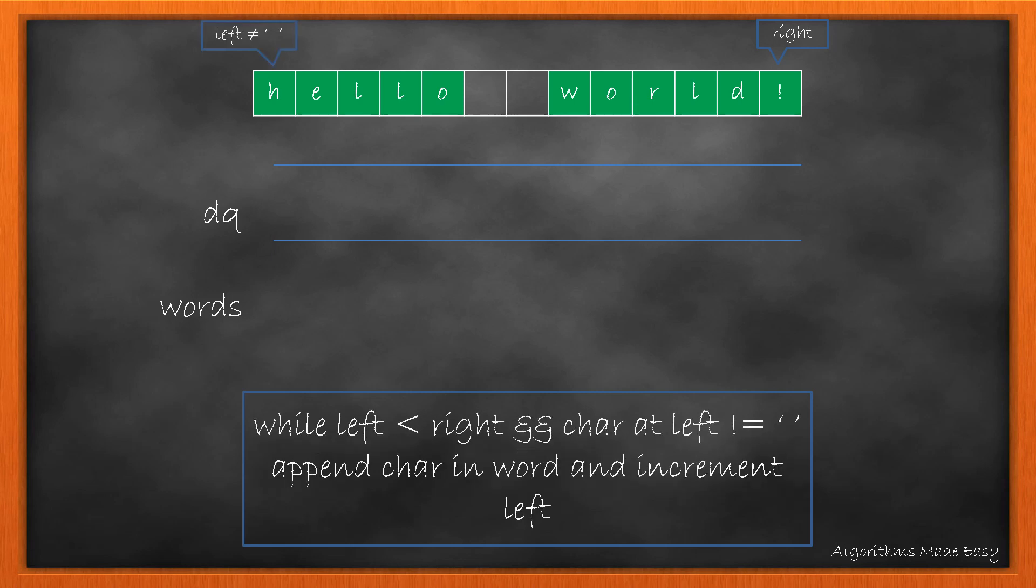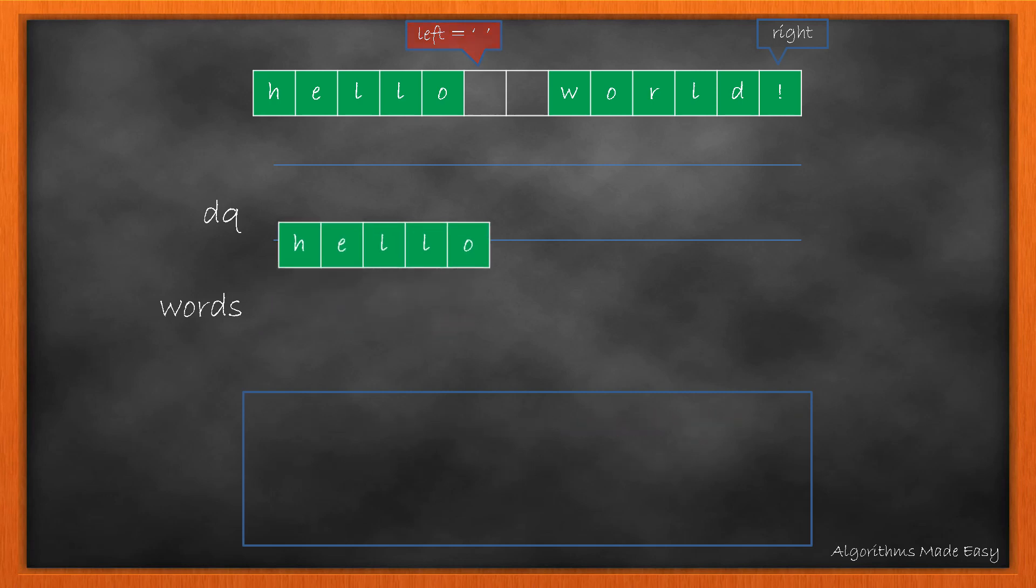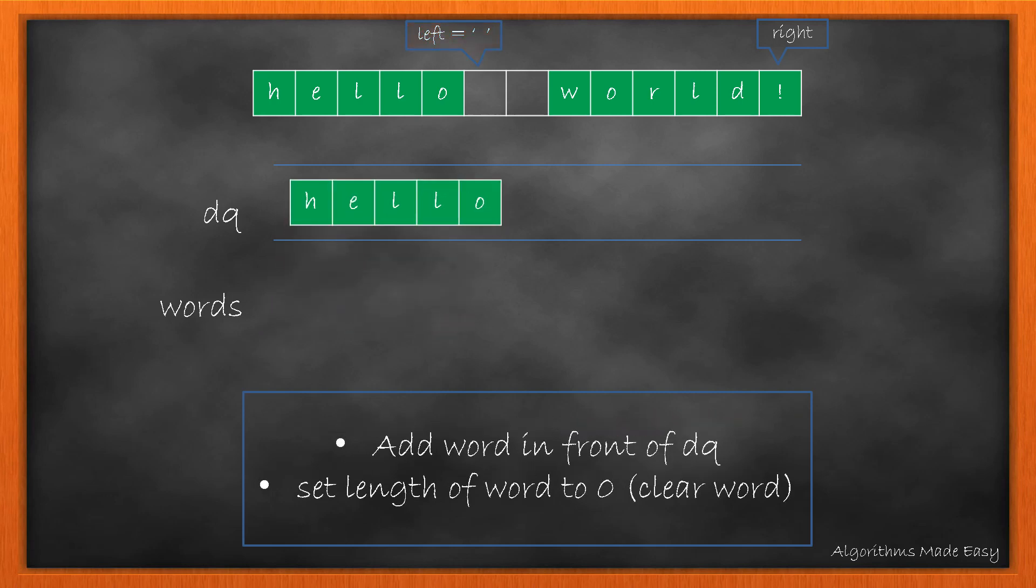We will keep appending character in the word till the left pointer is less than or equal to the right and the character at left is not a space character. Starting with first character as it is not a space character and is less than the right pointer, we append it in the word. We then move the left pointer one step towards right. Similarly for the second character. We continue this till we encounter a space character or the end of a string. As now we have encountered a space, we add the word in the front of DQ and reset the length of word to zero.